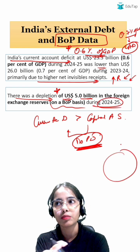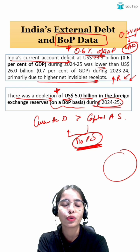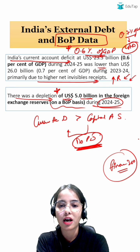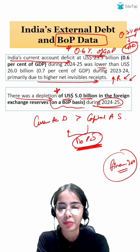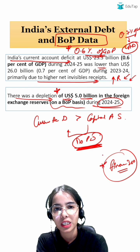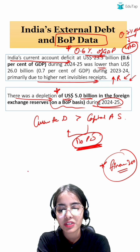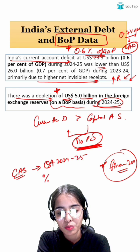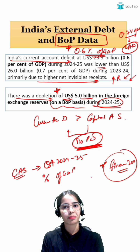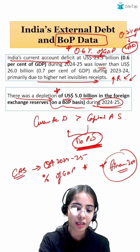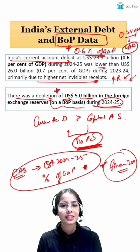If you want to know more about these data points in detail, I have taken a complete session in the Finance 360 Degree series covering India's external debt, balance of payment data, and foreign exchange reserves data. Do watch the complete session. Also, let me know in the comment section below what the current account surplus in Quarter 4 of 2024-25 was as a percentage of GDP — this is a quite new and important data point. Thank you everyone.